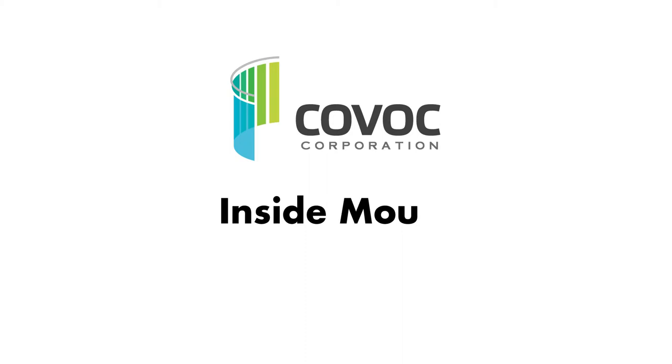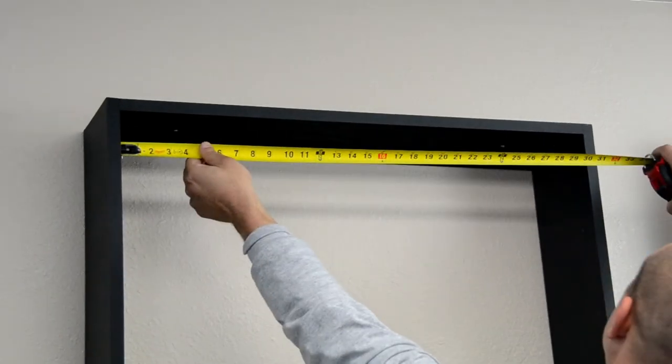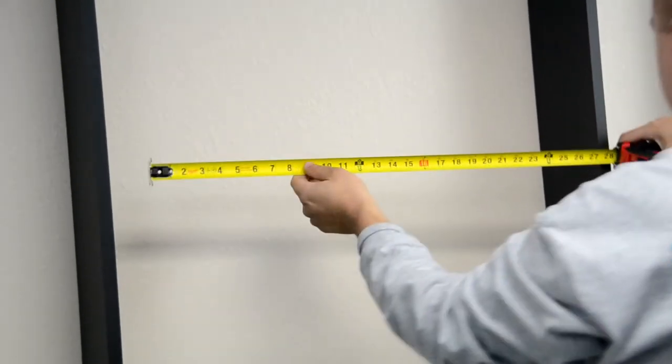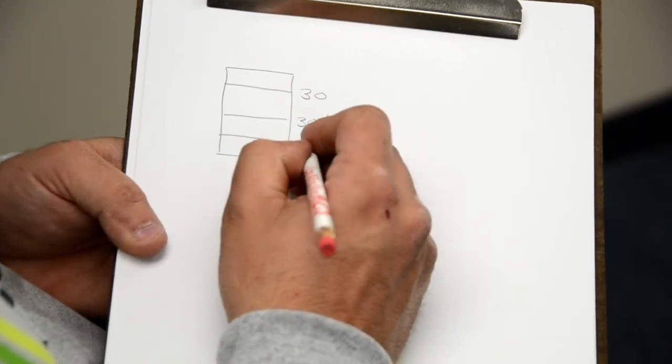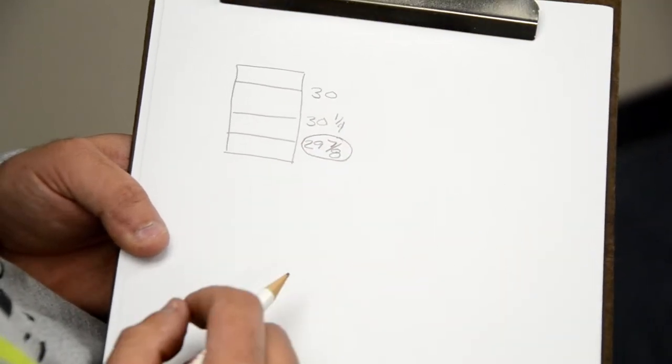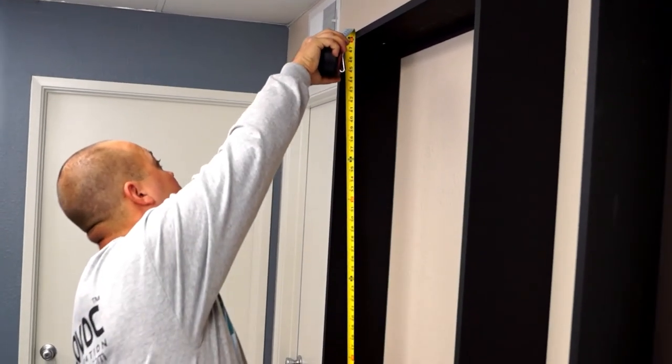For inside mount shades, measure the exact inside width of the window frame from one inside edge to the other. Measure in at least 3 different places and record the narrowest measurement. Measure the exact height inside the window frame.